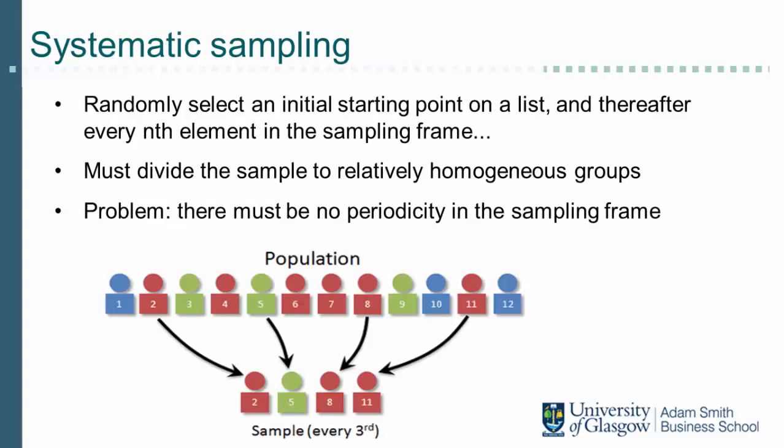Systematic random sampling is a related method aimed at obtaining a random sample. In systematic sampling, only the first element is selected using a random number, and then the other elements are selected by systematically skipping a certain number of elements. For example, in this illustration we choose every third element.